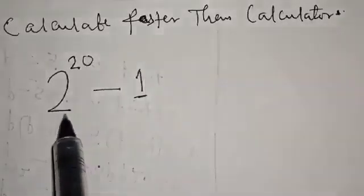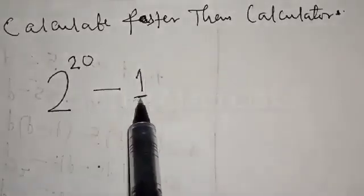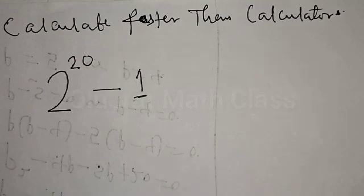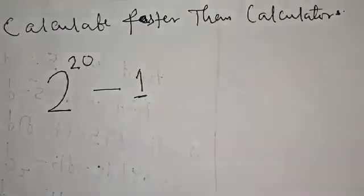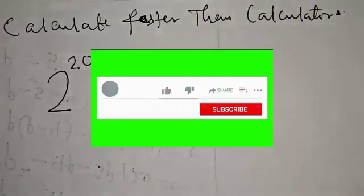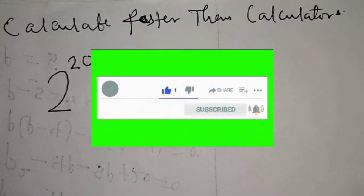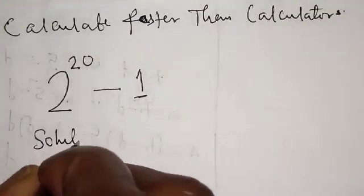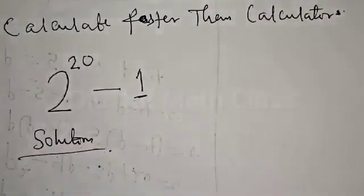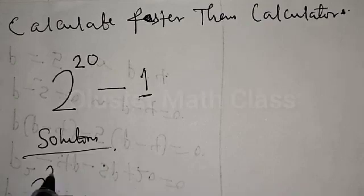Calculate faster than a calculator: 2 raised to power 20 minus one. Hi everyone, welcome to my class. In this class we want to look at how we can easily calculate 2 raised to power 20 minus one without using a calculator. This is going to be done in one minute, but before we proceed please don't forget to like, share, comment and subscribe. Thank you. Solution: we have 2 raised to power 20 minus one.